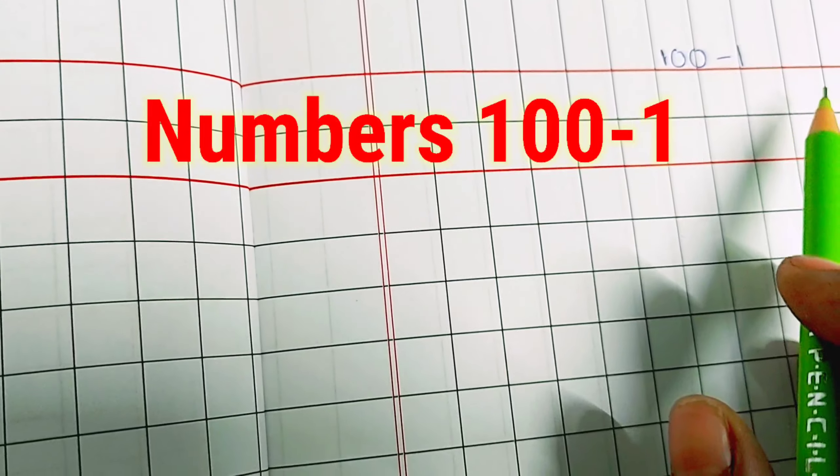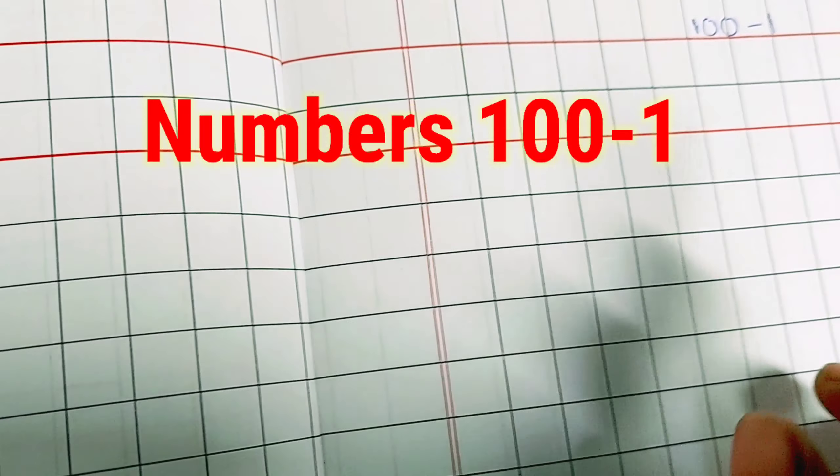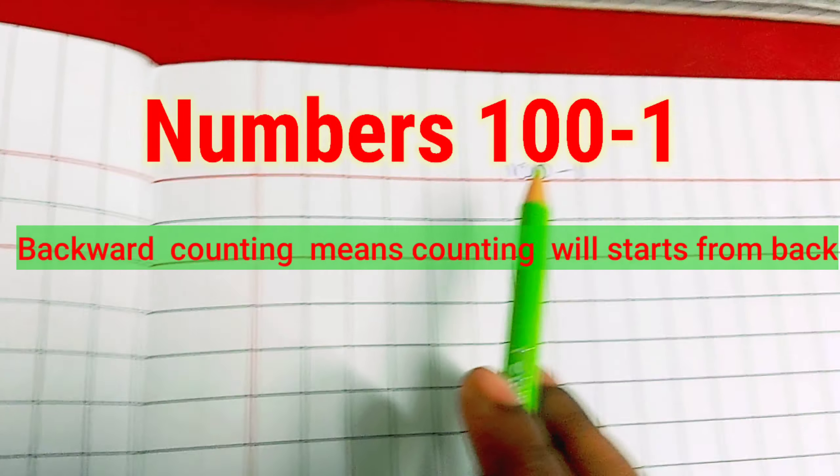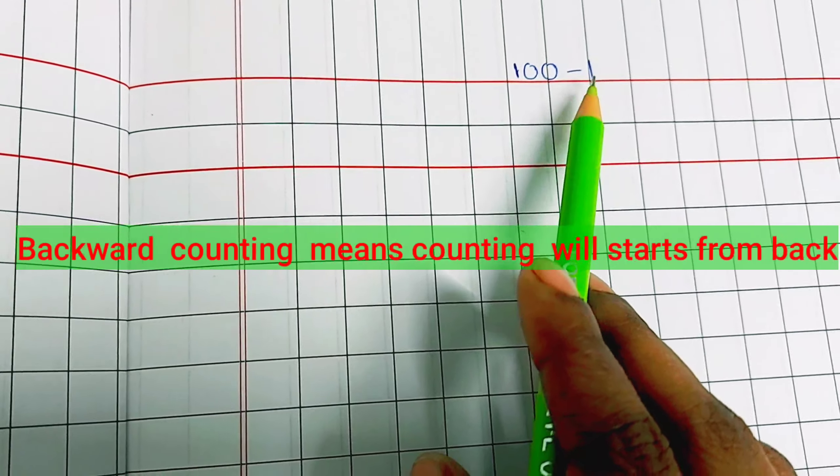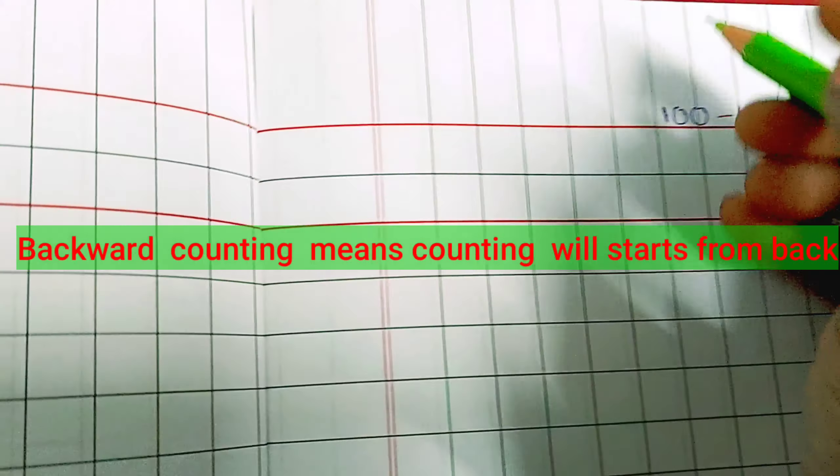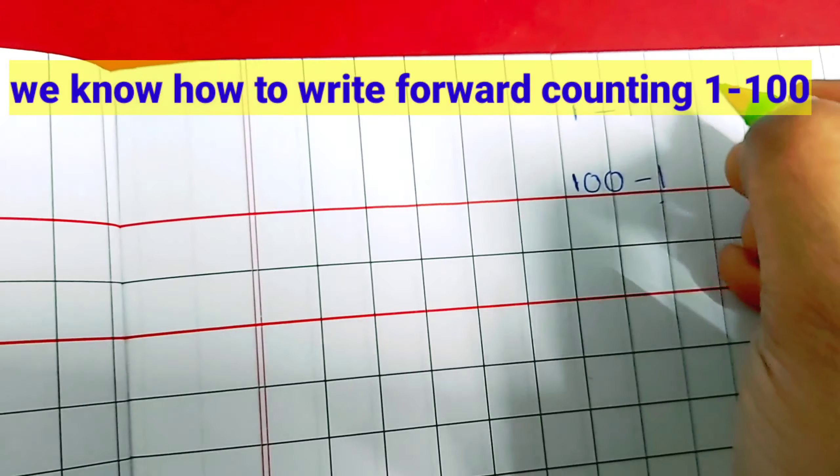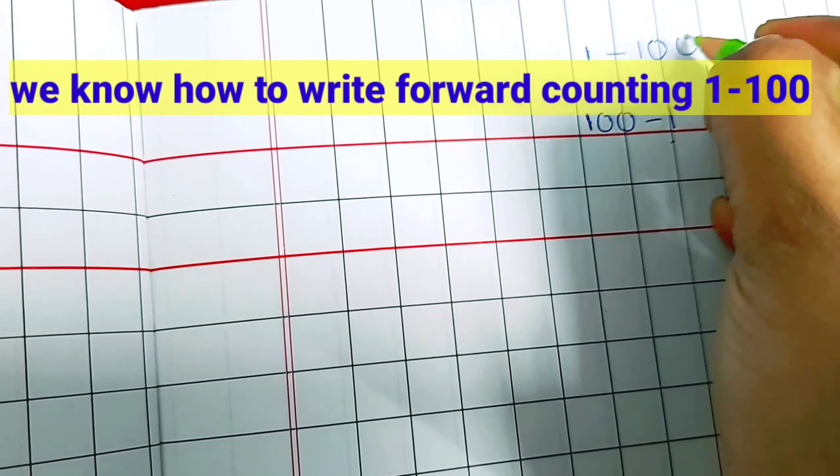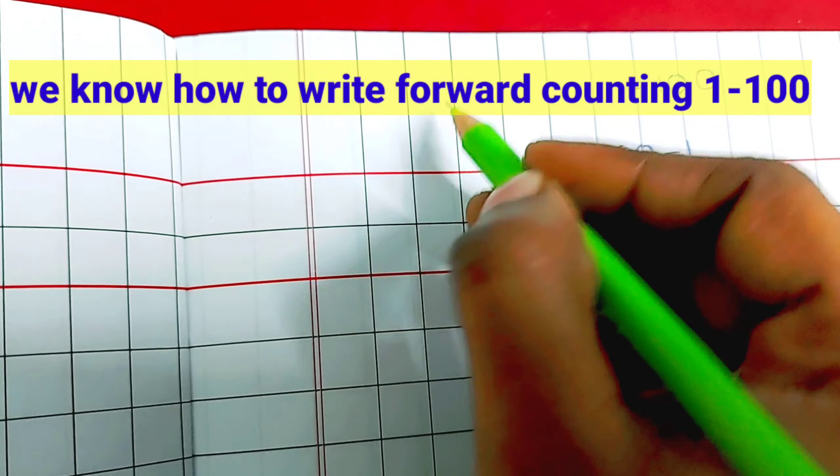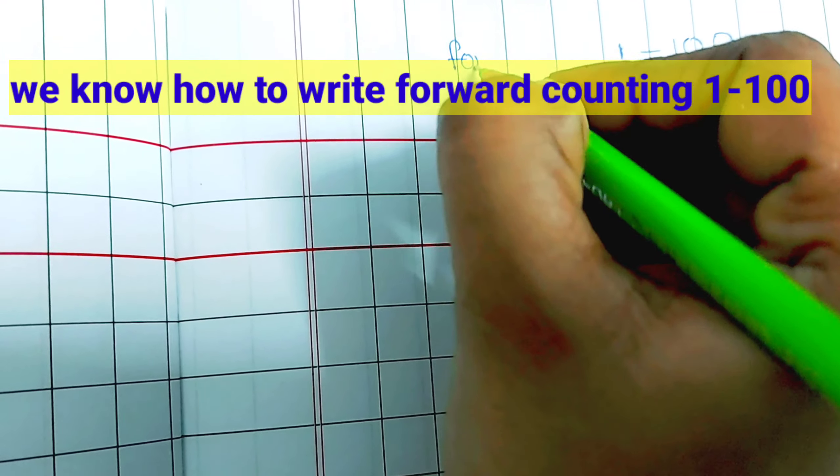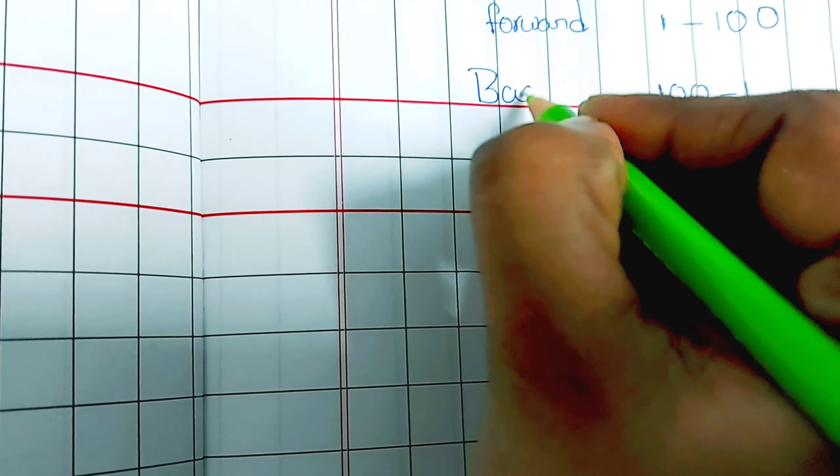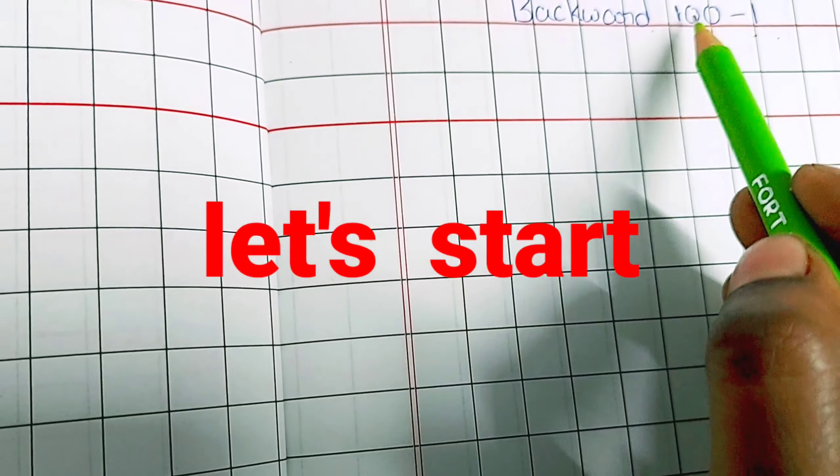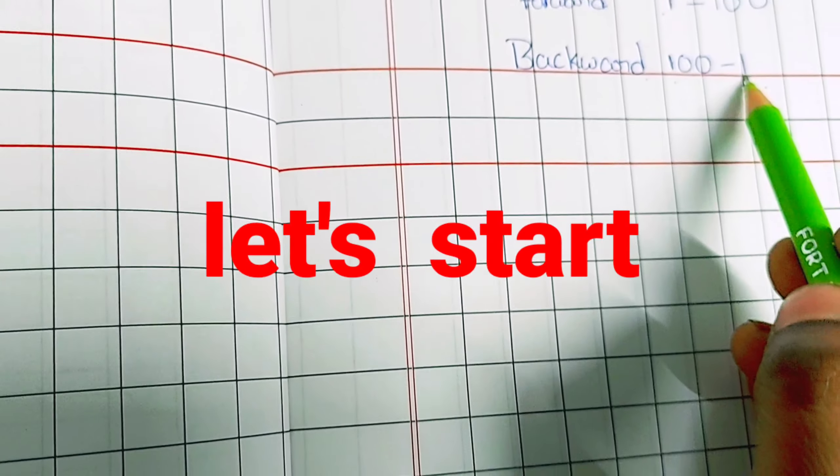So backward counting means counting will start from 100 to 1. Already we know that how to write 1 to 100. So this is called forward counting. This is called backward counting. So let's start today, how to write backward counting 100 to 1.